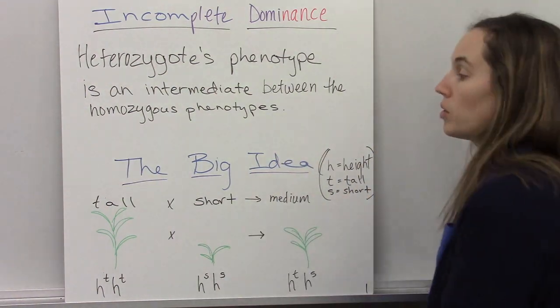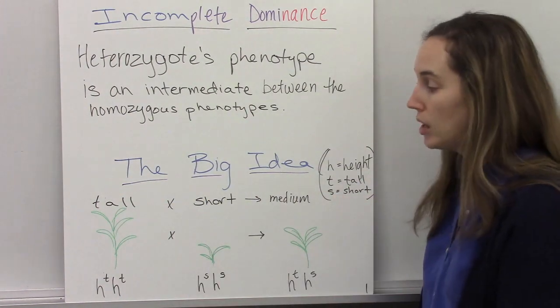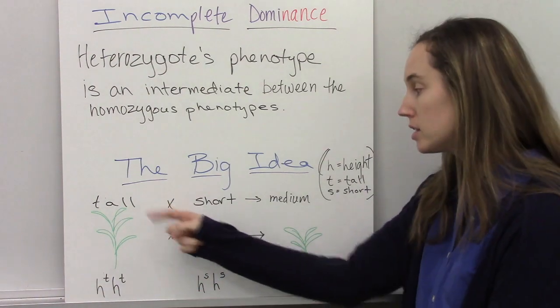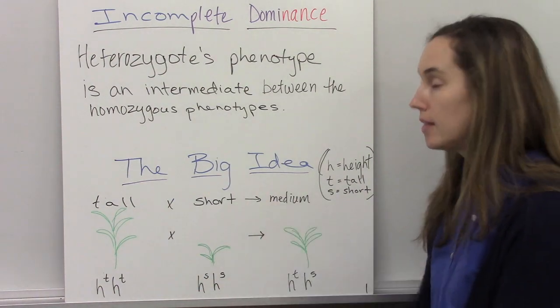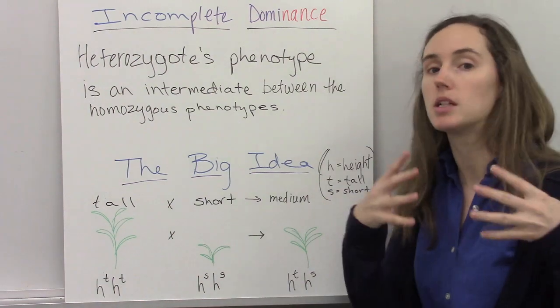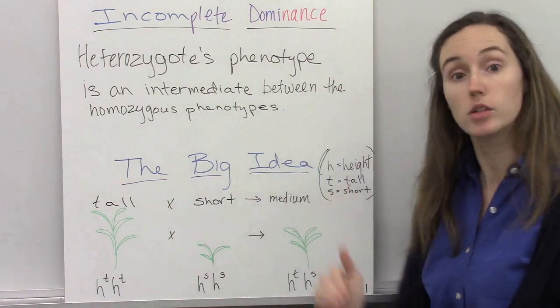So the big idea for an example is if I cross a tall plant and a short plant, the offspring would be medium height, because medium is an intermediate between tall and short.